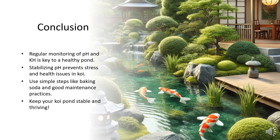Regular monitoring of pH and KH is the key to a healthy and thriving koi pond. By following these simple steps — like raising KH with baking soda and maintaining good pond hygiene — you'll keep your pond stable and your koi happy. Thank you for watching, and don't forget to subscribe for more pond care tips.